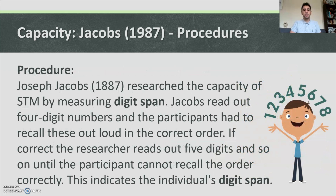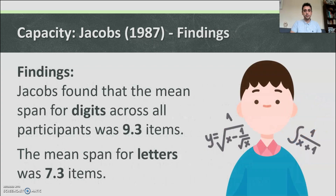Here's the procedure by Jacobs in 1887. Joseph Jacobs researched the capacity of short-term memory by measuring digit span. Jacobs read out four-digit numbers and participants had to recall these out loud in the correct order. If correct, the researcher reads out five digits and so on until the participants cannot recall the order correctly. This indicates the individual's digit span. Jacobs found that the mean span for digits was 9.3 items and the mean span for letters was 7.3 items.